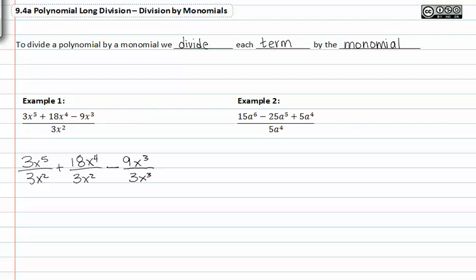Notice I've taken each term in the numerator and divided it by the same three x squared that was in the denominator. I've broken up the terms and divided it by the same thing.